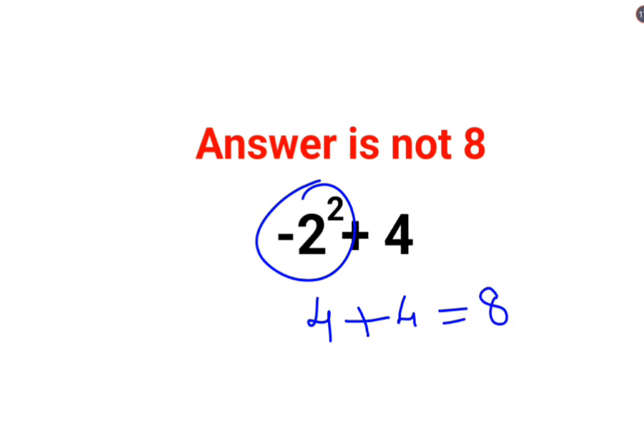Now that would have been the case if this was under a bracket. But since the actual question is not in that form, it means that you need to have the negative sign as it is, and then we need to do the square of 2, which is 4 plus 4.